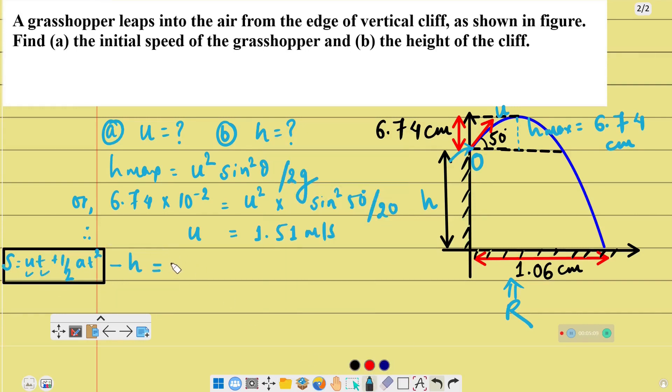s = ut + ½at². For vertical velocity, u_y, the vertical component is positive initially, u_y t. Due to gravity acting downward, it's negative: minus ½gt².